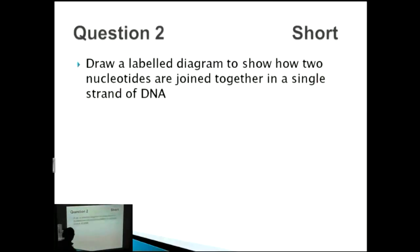Second question. Draw a label diagram to show how two nucleotides are joined together in a single strand of DNA. A very important part of this one is to underline the fact that we're talking about a single strand of DNA. So DNA we normally know is a double-stranded structure, but this time we're just talking about one side of that, one particular strand. And in fact, if you were to draw the double-stranded structure of DNA like we did in the previous diagram, you would actually lose marks.